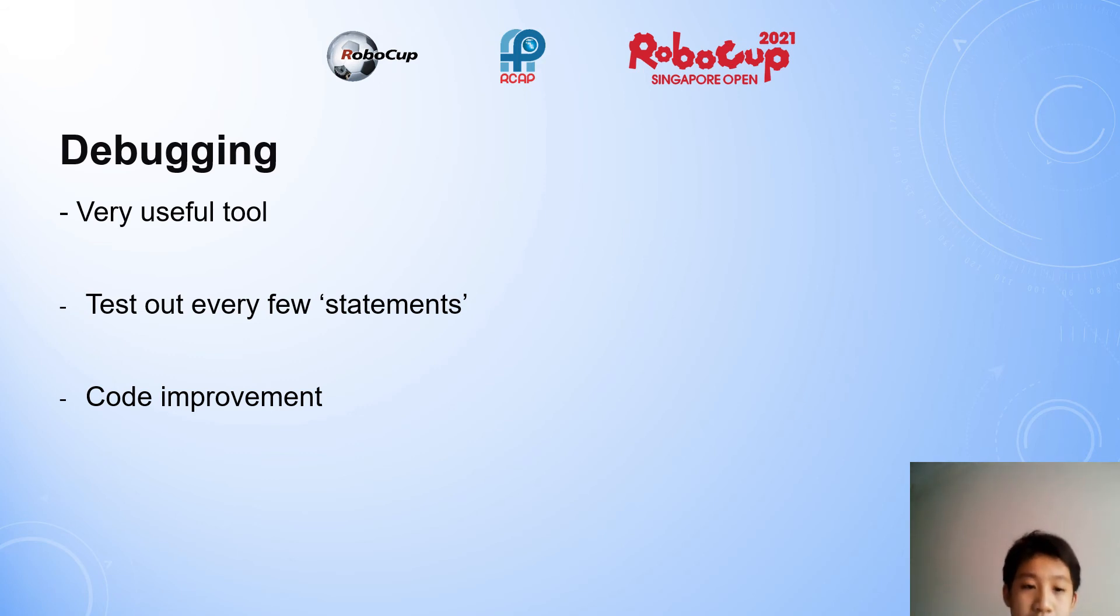So now we just want to shout out to debugging. It's a very useful tool. And our tip to others is to test it out every few statements. So you can pick up some mistakes. And it's also very useful for code improvement. Like for us to tune the wheel speed to the best possible number. So using the debugging AI you can see what's the wheel speed and stuff like that. It's very useful. And it's useful for a lot of other reasons. Like if you make callous mistakes in the code, you can easily find it out and rectify it.